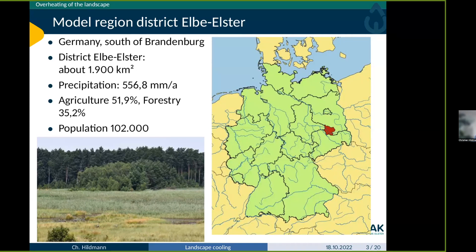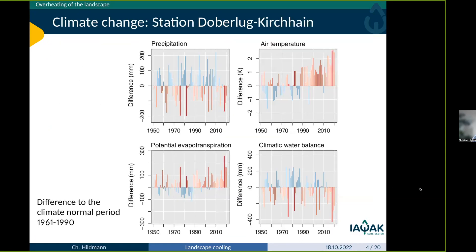Sorry for this title — we just needed it to secure research funding. Regarding the overheating of the landscape: here is one example from a climate station in our region. We compared the old climate normal period from 1961 to 1990 with the present time series, and we can see that precipitation in the last years is less, but there is no clear trend.